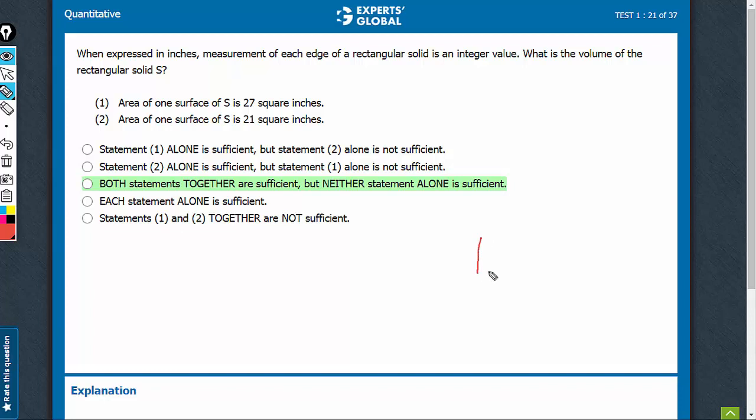We are dealing with a rectangular solid. There are going to be three sides, something like this. One side is this one, the other is the height, and third is this one. Volume is going to be A into B into C. We have to know the value of each of the three sides.